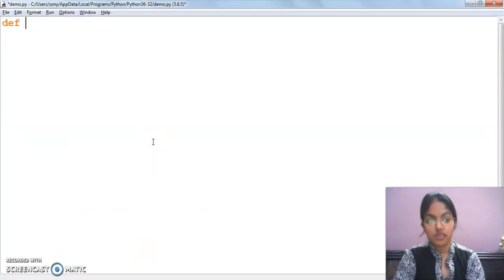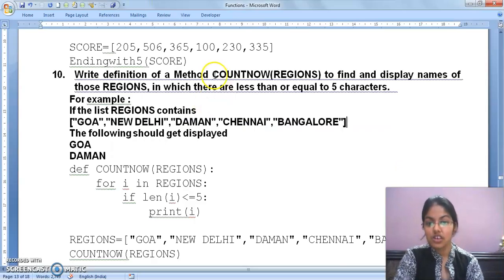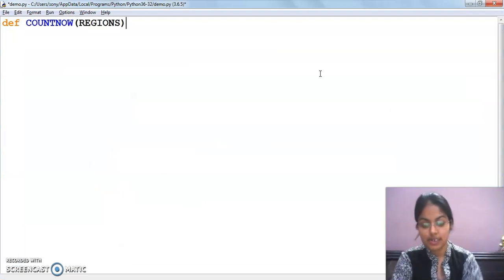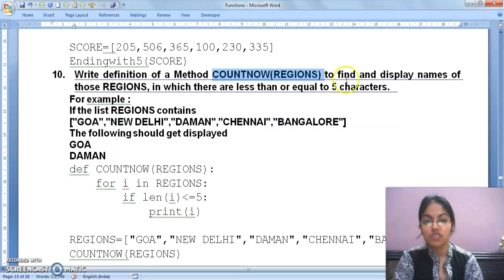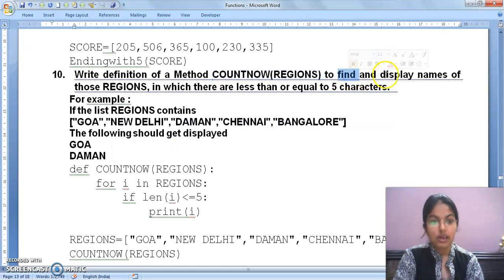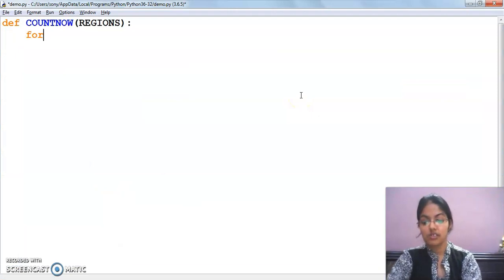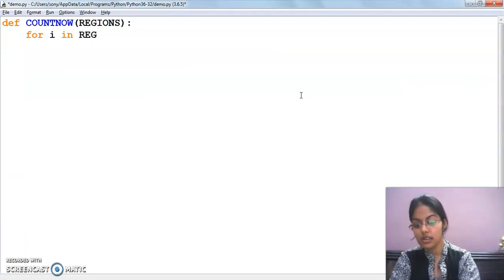First start with the def keyword. Now, the function name is count_now and the name of list is regions. I am writing it here. Now, what do I need to do? To find and display, I need to display names of those regions in which there are less than or equal to 5 characters.